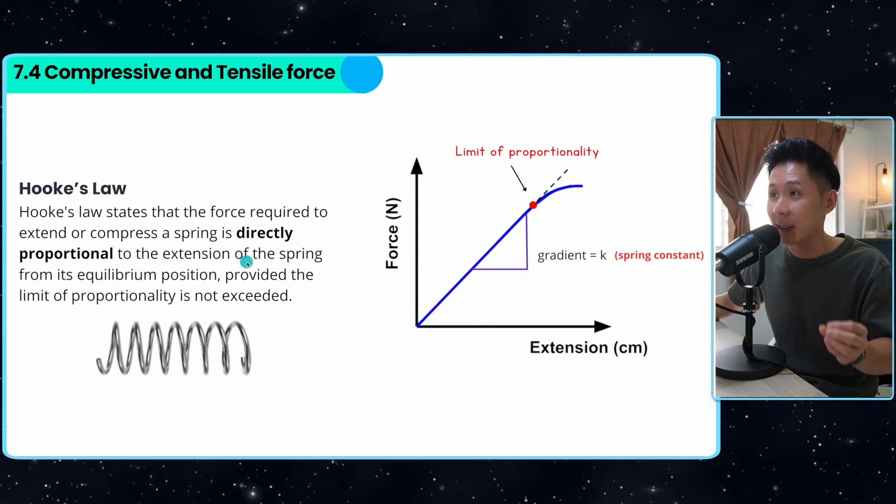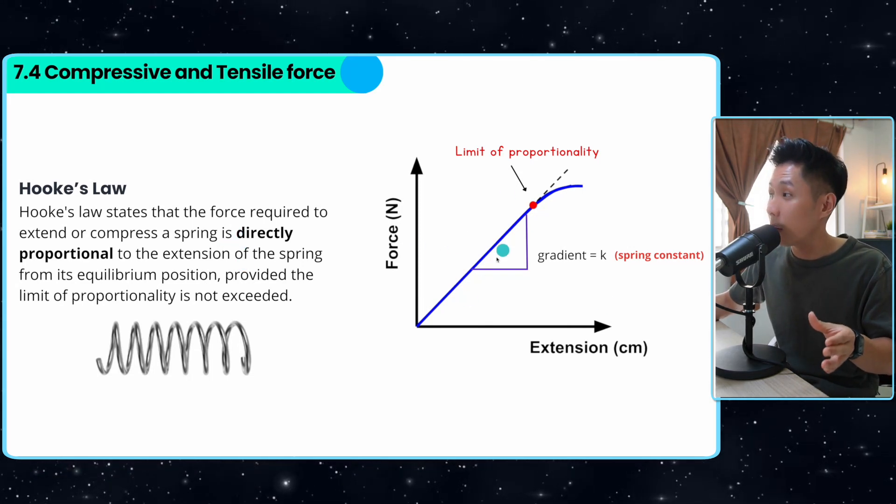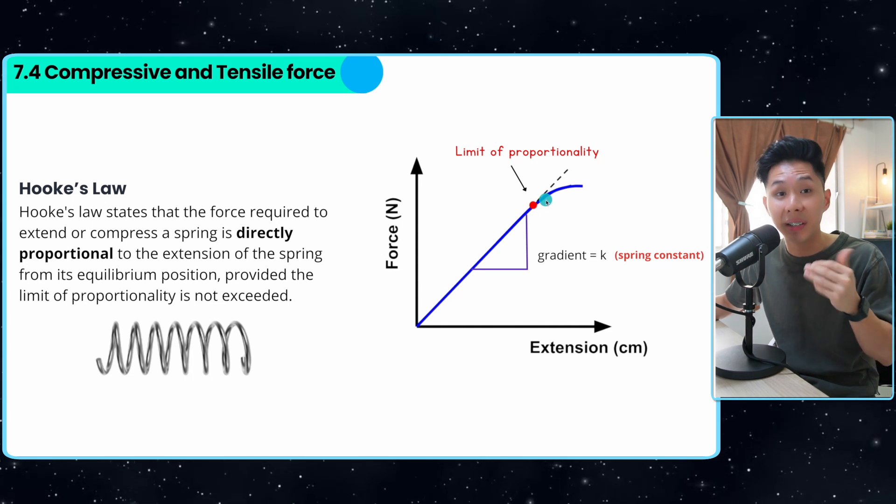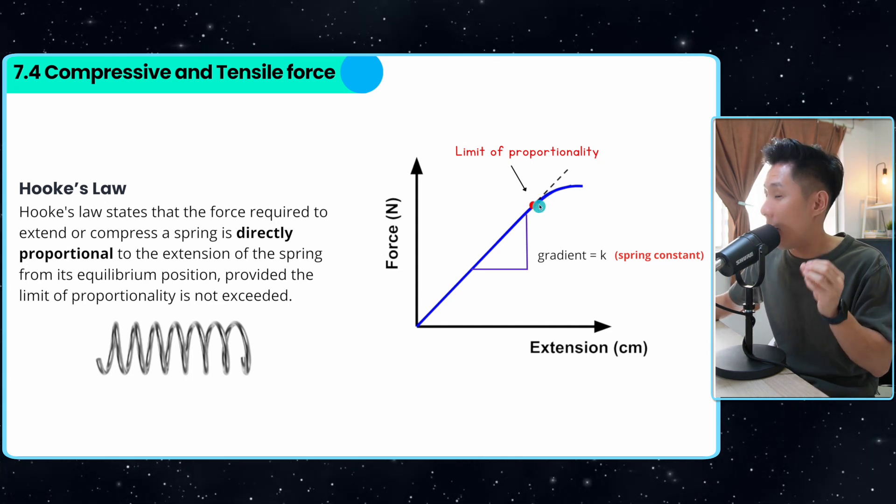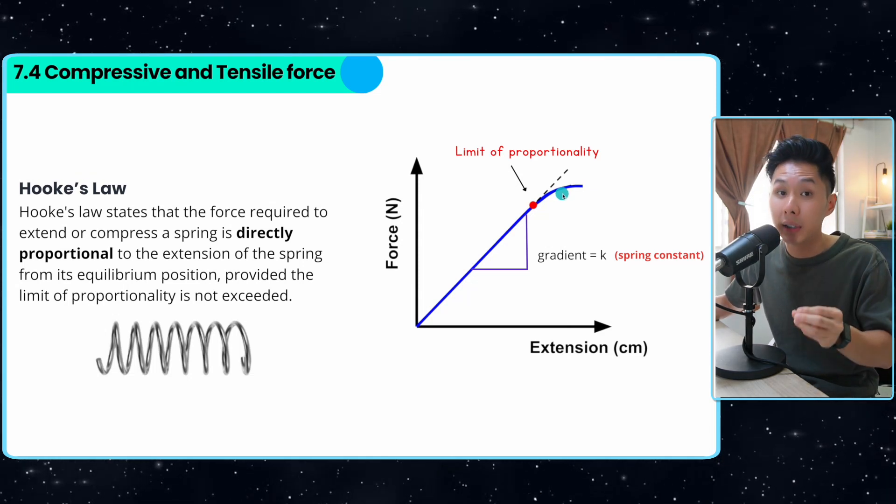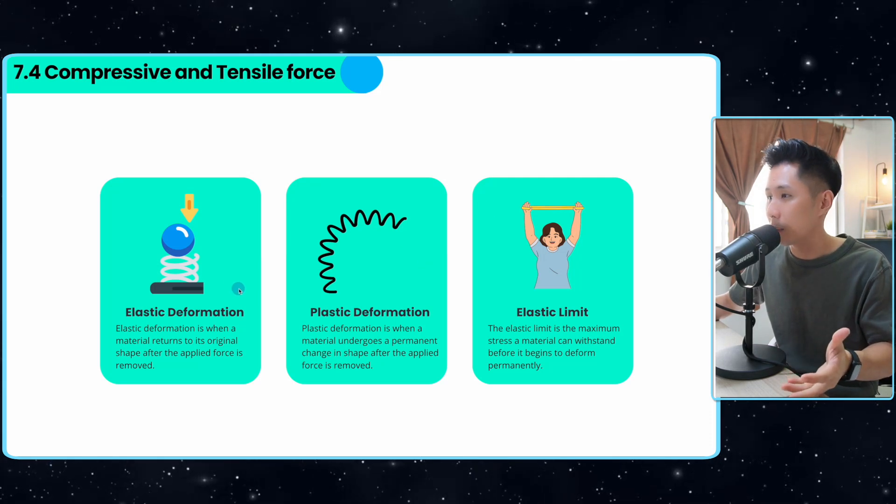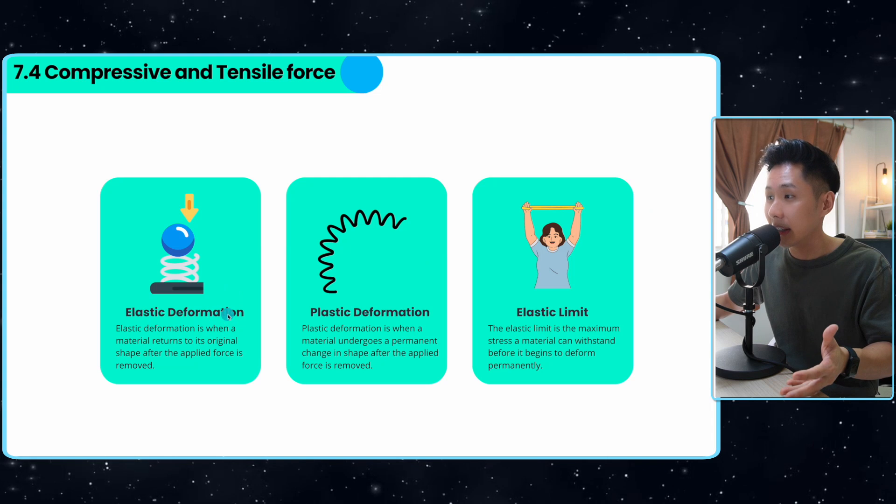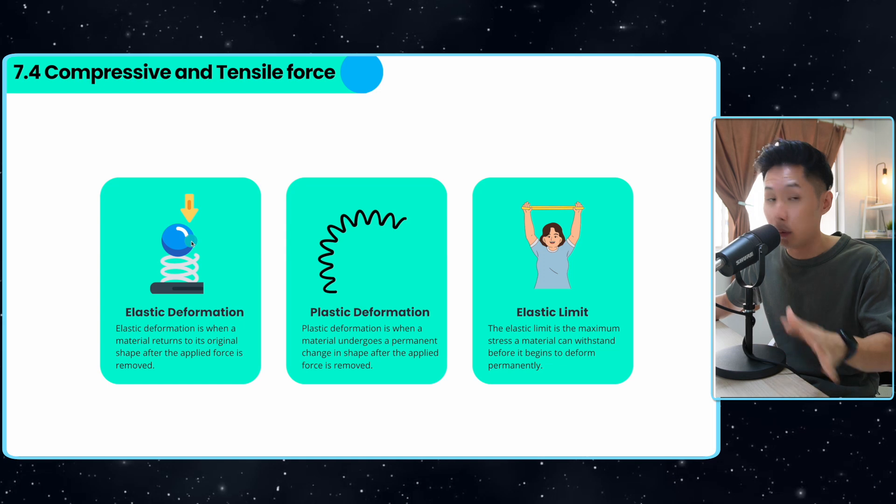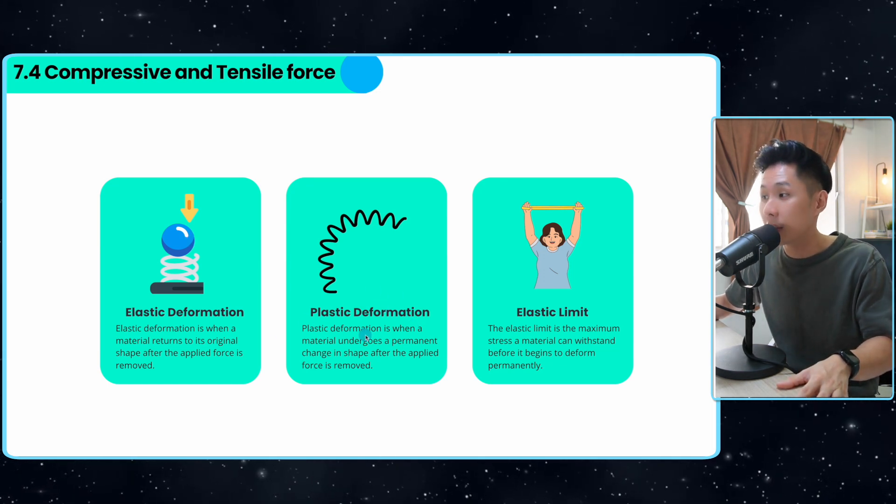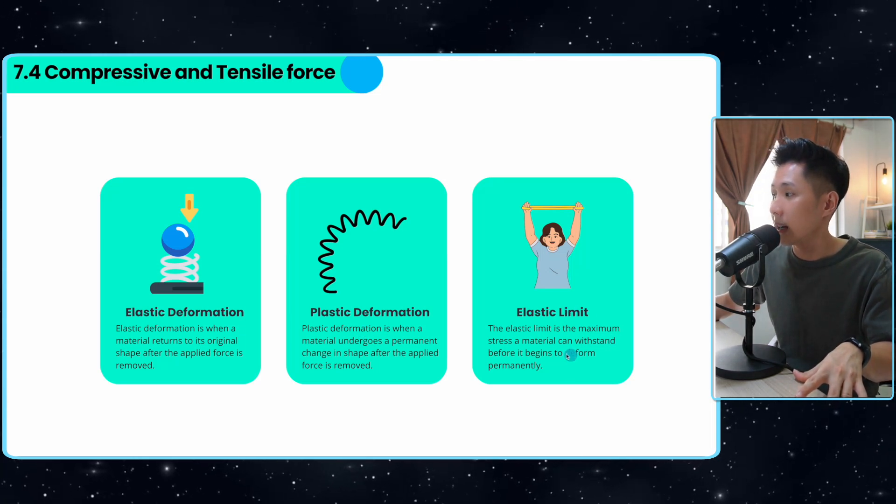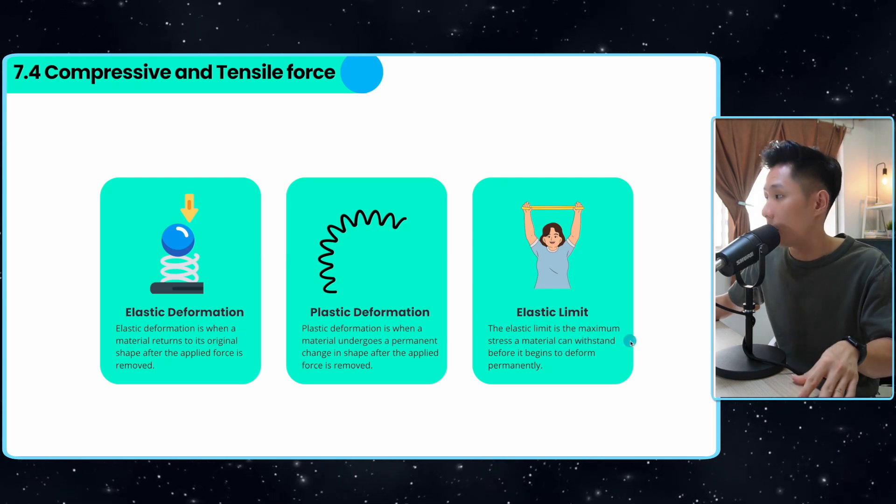We have another law in this study called Hooke's law. It states that the amount of force that you apply is directly proportional to the extension that the spring would get until this point called the limit of proportionality. After this point, you can see that the extension is no longer linear. It means that the spring is permanently damaged. In terms of spring, we have different terms that you need to know. Elastic deformation is when the material returns to its original shape after applied force is removed. We have plastic deformation. It means that a material undergoes a permanent change in shape. You just can't go back. And elastic limit is the maximum stress a material can withstand before it begins to deform permanently.